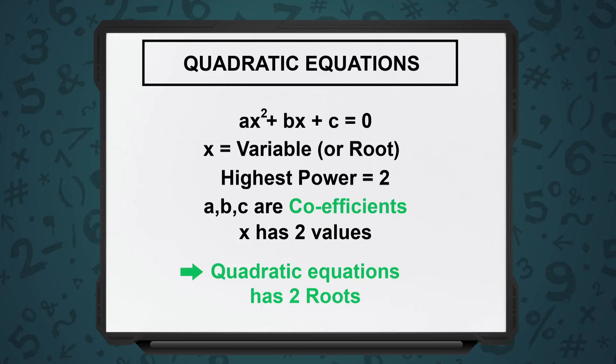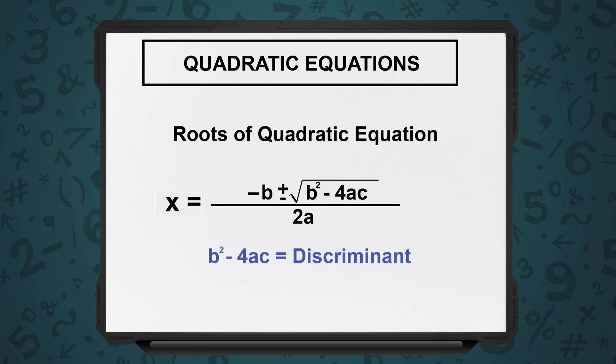If a quadratic equation is of the form Ax² + Bx + C = 0, the standard formula for the root is x = (−B ± √(B² − 4AC)) / 2A. This is the standard formula.